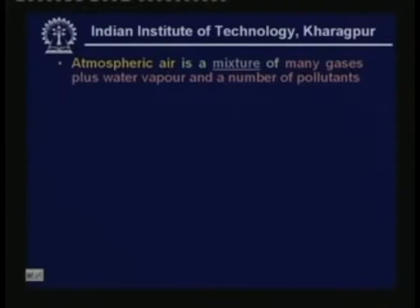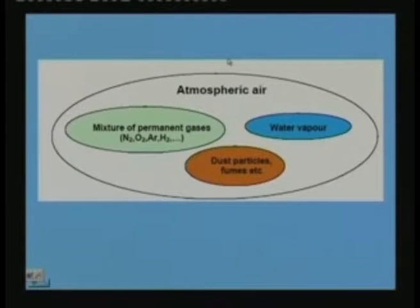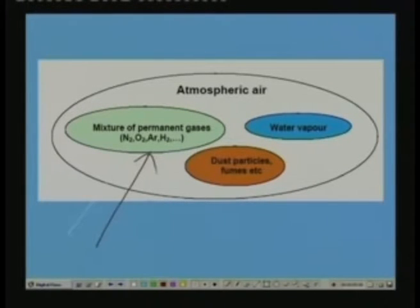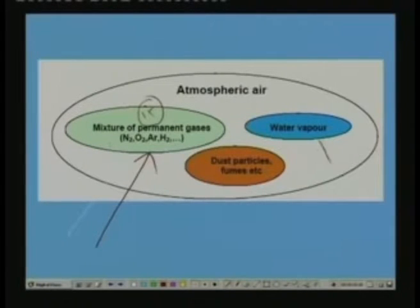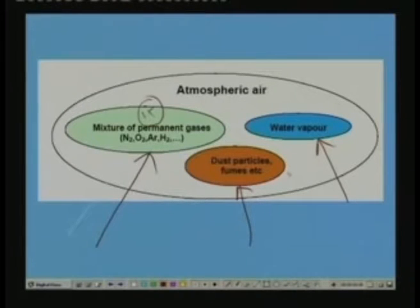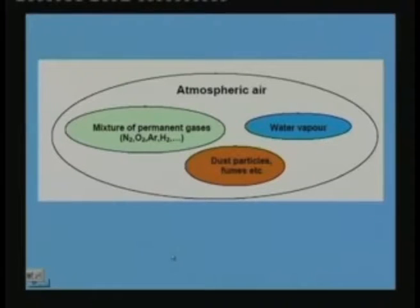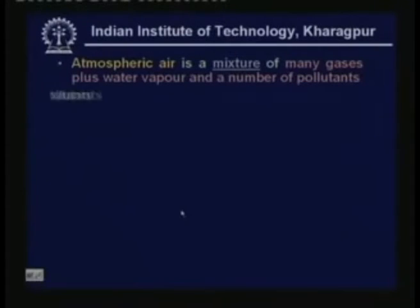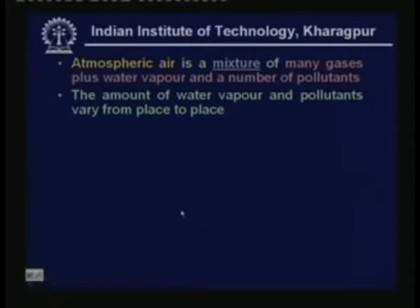First of all, let us look at atmospheric air. Atmospheric air is a mixture of many gases plus water vapor and a number of pollutants. That means you have a mixture of permanent gases like nitrogen, oxygen, argon, hydrogen, and others — there are about 15 gases in total — and you also have water vapor, dust particles, dirt particles, fumes, vapors, and so on. All these taken together is what we call atmospheric air.